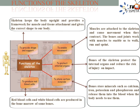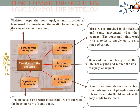5. Production of Blood Cells — certain bones in the skeleton contain red bone marrow, and the bone marrow produces red blood cells, white blood cells and platelets. Examples of bones that contain marrow are the pelvis, sternum, vertebrae and clavicle.